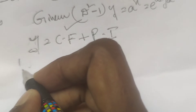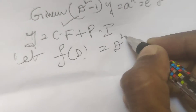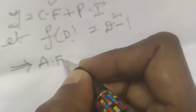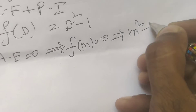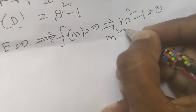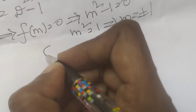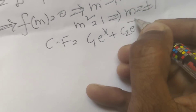First, find out the complementary function CF. Let f(D) = D² - 1. To find the complementary function, assume the auxiliary equation f(m) = 0. That implies m² - 1 = 0, so m² = 1, giving m = ±1. Therefore, CF = c₁e^x + c₂e^(-x).